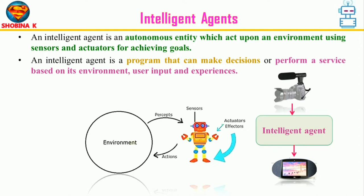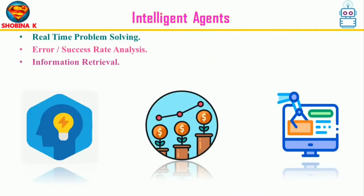AI-enabled agents collect input from the environment by using sensors like cameras, microphones and other sensing devices. Then the agent performs some real-time computation on the input and delivers output using actuators like screens or speakers. These agents have abilities like real-time problem solving, error or success rate analysis, and information retrieval.